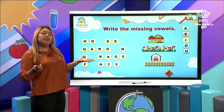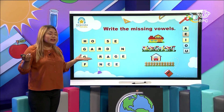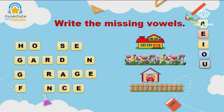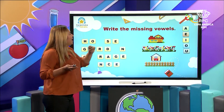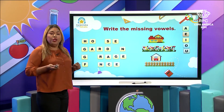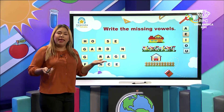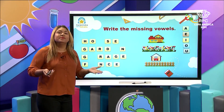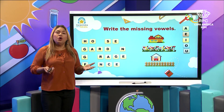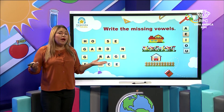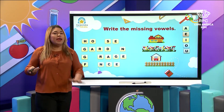Could you please help me to complete the missing vowels? Let's review first — remember, in English we have five vowels: A, E, I, O, U. Repeat: A, E, I, O, U. How many vowels? We have five.